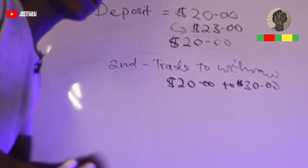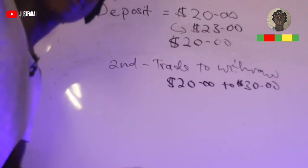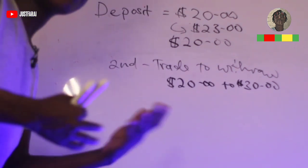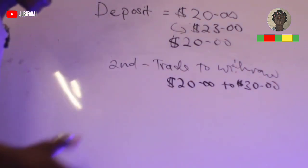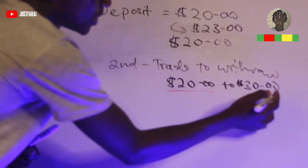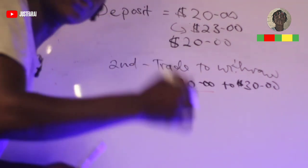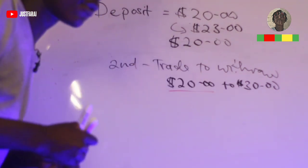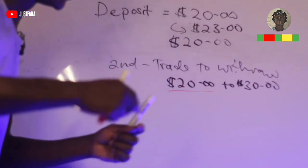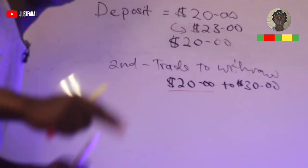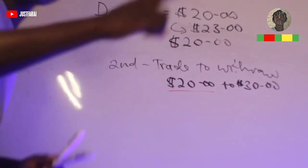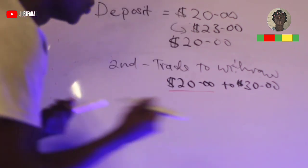Once you hit $30, you withdraw that $10 profit and put it aside. Do this maybe five times and you'll have around $50 set aside — all while only ever trading from your base $20. This is the 'trade to withdraw' method, the second part of growing small accounts.